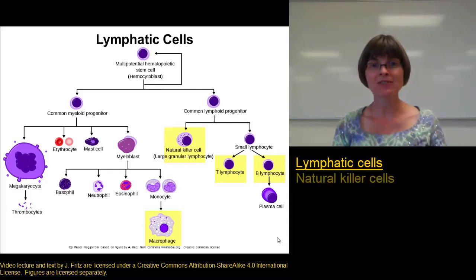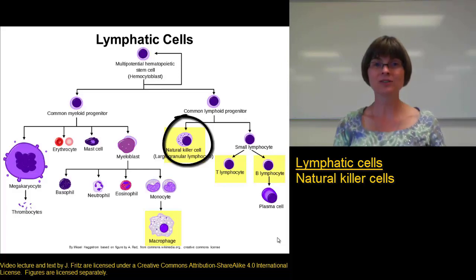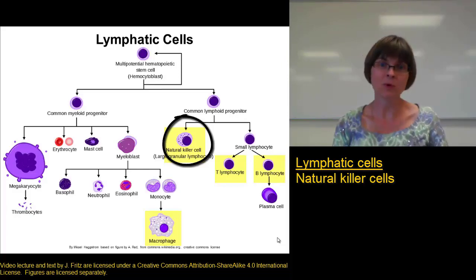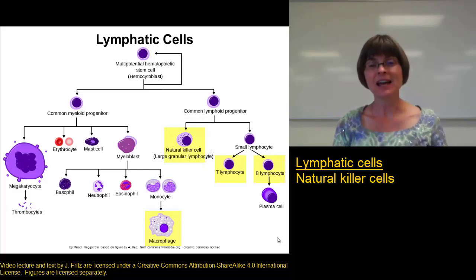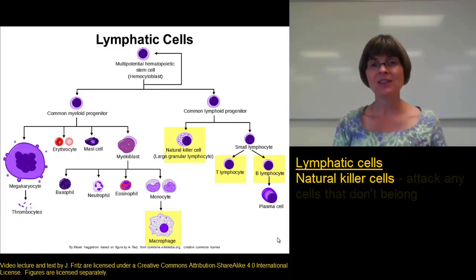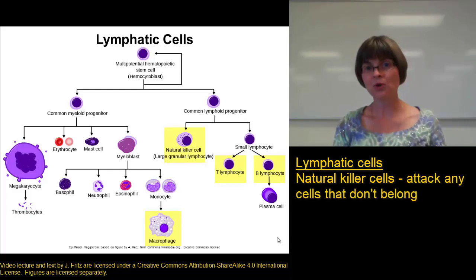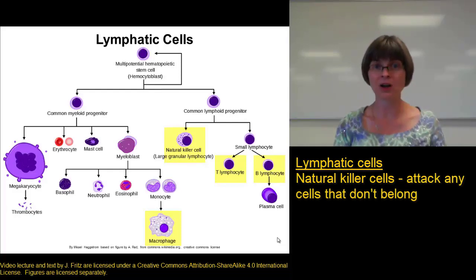First, we have the natural killer cells. Natural killer cells are great, and based on their name, they kill. The natural killer cells are nonspecific in that they will destroy any type of cells they find in the body that don't belong — that would be any sort of cells that have different cell identity markers.